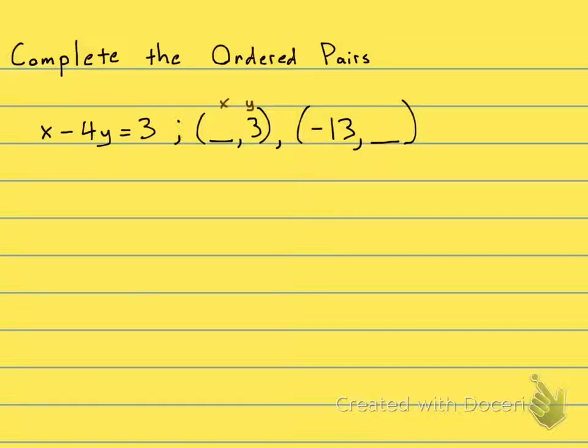I'm going to take this Y and plug it in right there for Y, and then I'll have to find out what X is. For the second ordered pair they give me the X but they don't give me the Y, so I'll take negative 13 and plug it in right here for X and then solve for the Y. So this is really two different problems. Okay, let's do it. X minus 4Y equals 3.